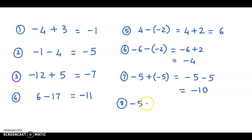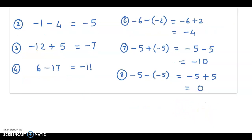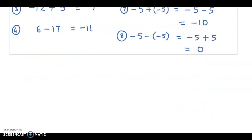Question number 8: minus 5 minus of minus 5. Again you have a negative next to a negative, so this becomes positive. This becomes minus 5 plus 5. You take away 5 and add 5, so the answer is 0.